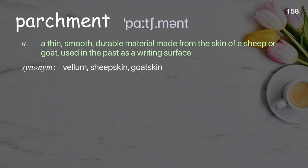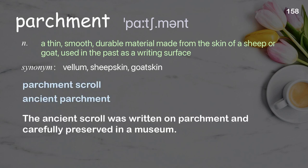Parchment. A thin, smooth, durable material made from the skin of a sheep or goat, used in the past as a writing surface. Examples: parchment scroll, ancient parchment. The ancient scroll was written on parchment and carefully preserved in a museum.